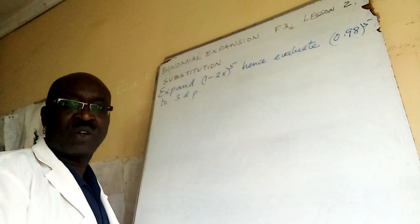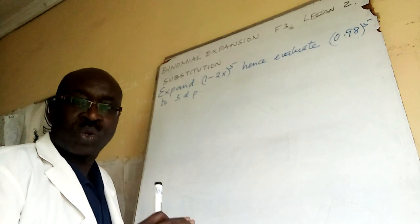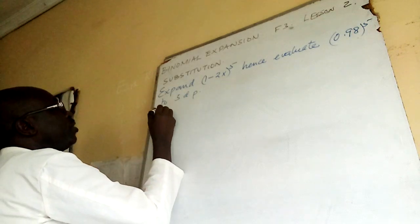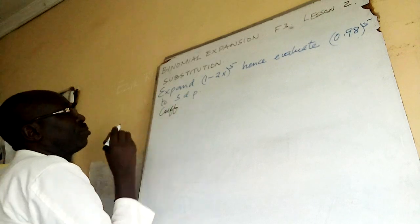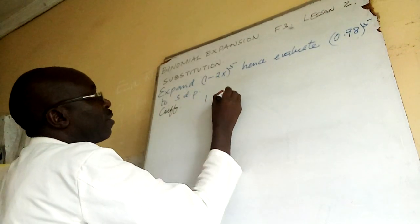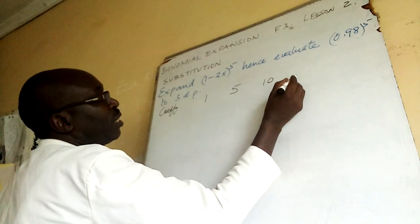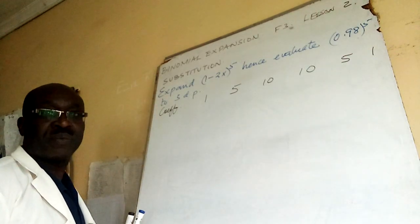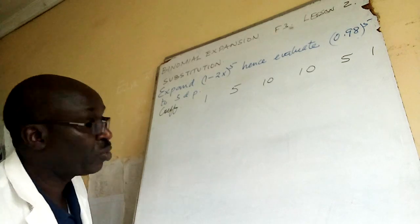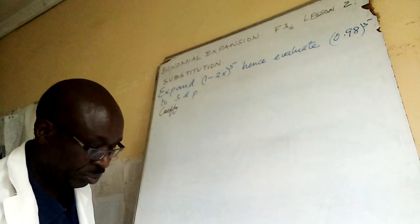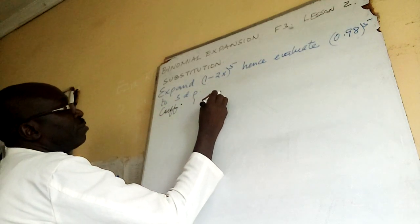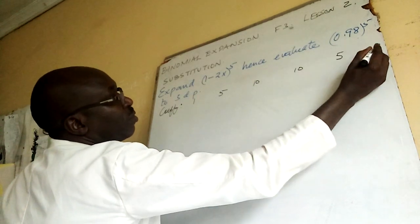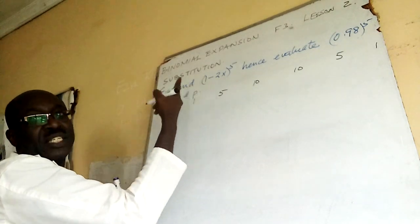Our answer should be to five decimal places. So what is the basic thing? As I told you, write the coefficients. My coefficients from the table are 1, 5, 10, 10, 5, and 1. Those are my coefficients.